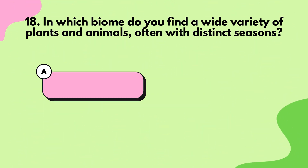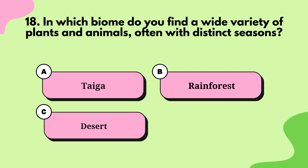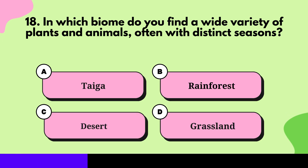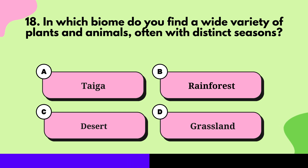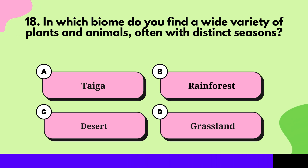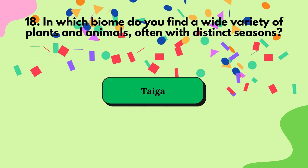In which biome do you find a wide variety of plants and animals, often with distinct seasons? Taiga.